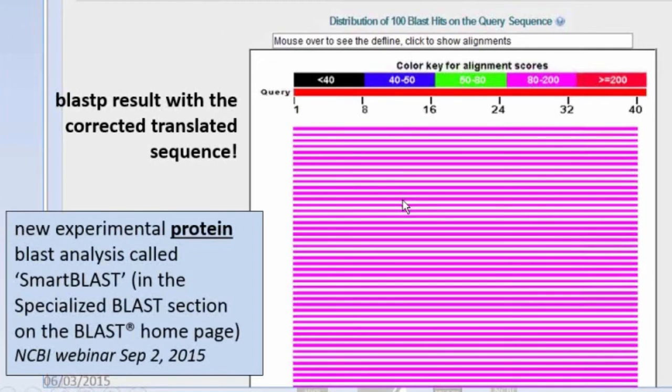There's also a new experimental protein BLAST analysis called SmartBLAST. You can find it in the Specialized BLAST section on the homepage. Peter Cooper will be doing a webinar about SmartBLAST on September 2nd. You can get information about that webinar from the webinar's page. That link was shown at the very beginning of today's webinar.